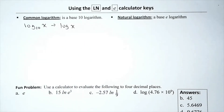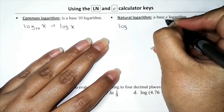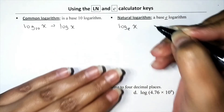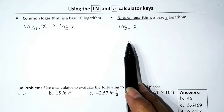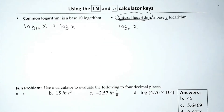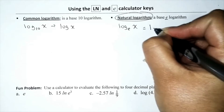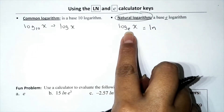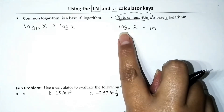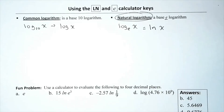The natural logarithm is the name given to a logarithm with base e. So we have log base e of x, but when the base is e, we don't write it as log base e — we rewrite it as the natural logarithm, abbreviated ln. There's no need to write the base explicitly. In this case, we have the natural log of x.